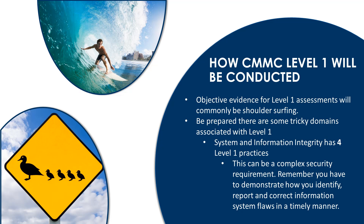Organizations will need to be prepared for some of the trickier domains associated with Level 1. When we look at system and information integrity, it has four Level 1 practices and is a fairly complex security requirement. You have to demonstrate how you identify, report, and correct information system flaws in a timely manner. For example, you might run a vulnerability scan of your environment to get a report showing any system flaws. You then have to show how you would correct or remediate those vulnerabilities within the environment and system in a timely manner. That timely manner puts a level of cadence into how often you might be running vulnerability scans and how often you might be reporting or correcting vulnerabilities.